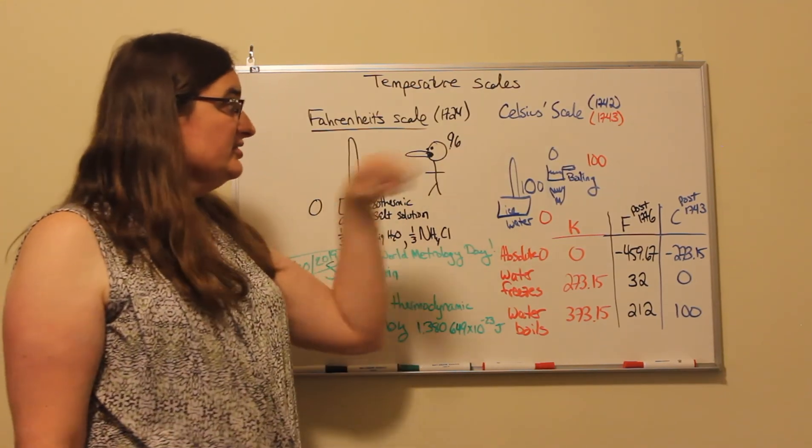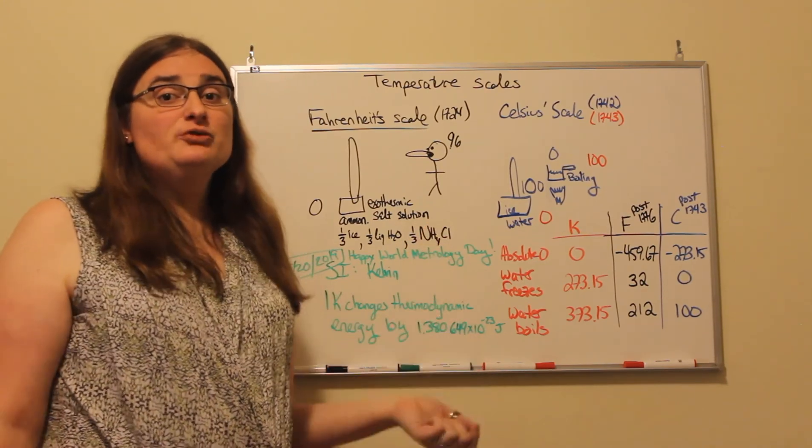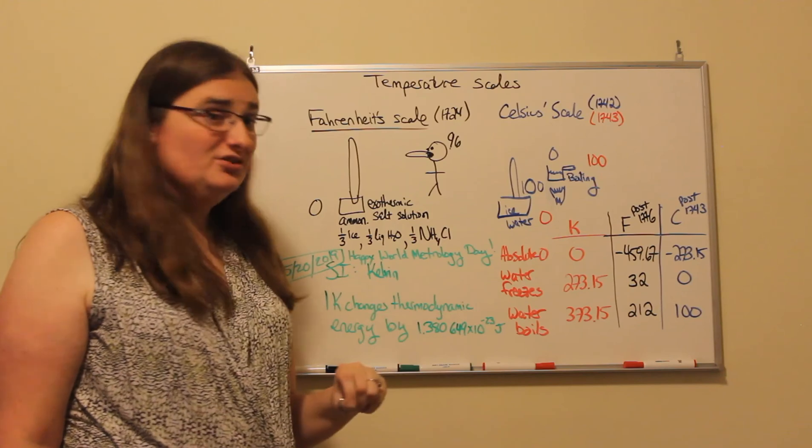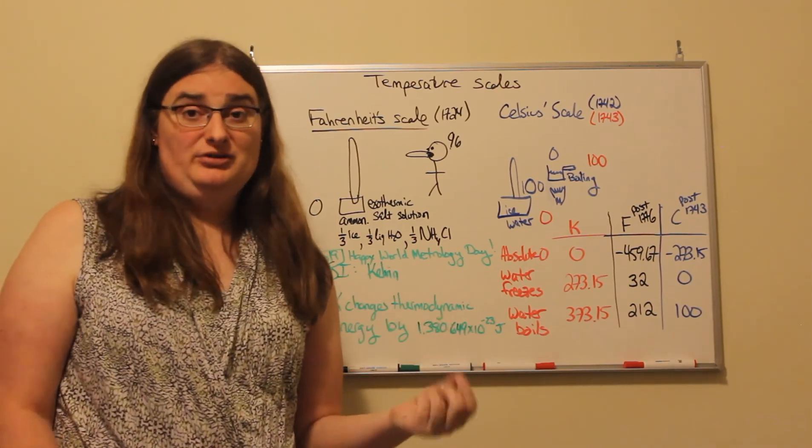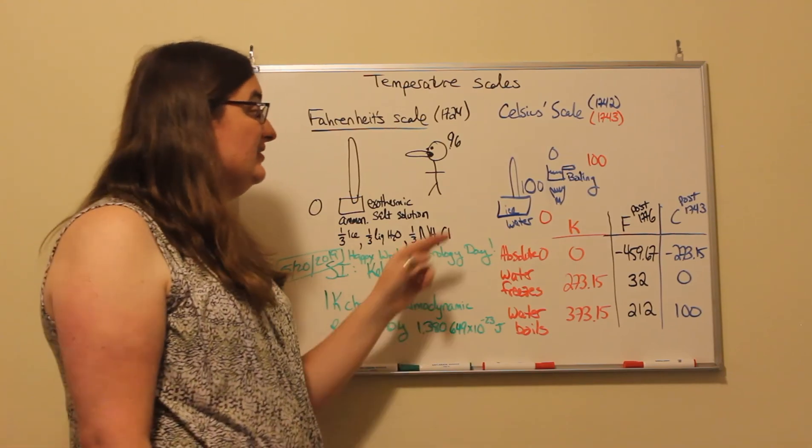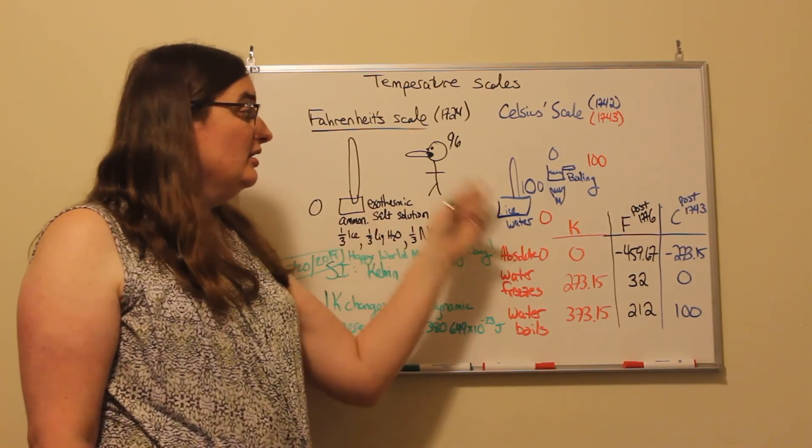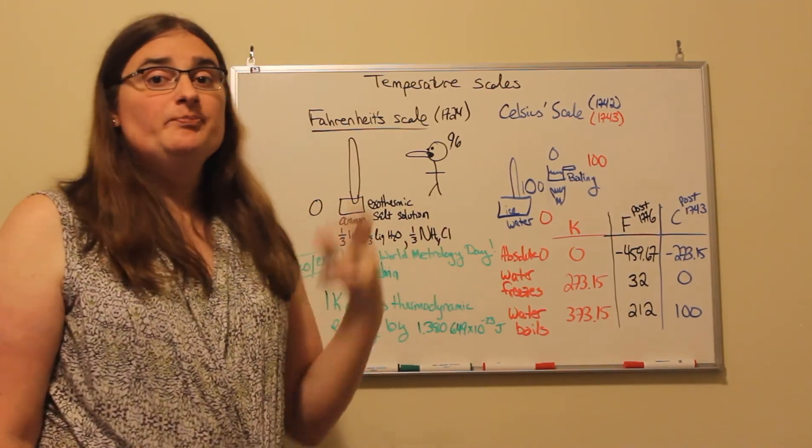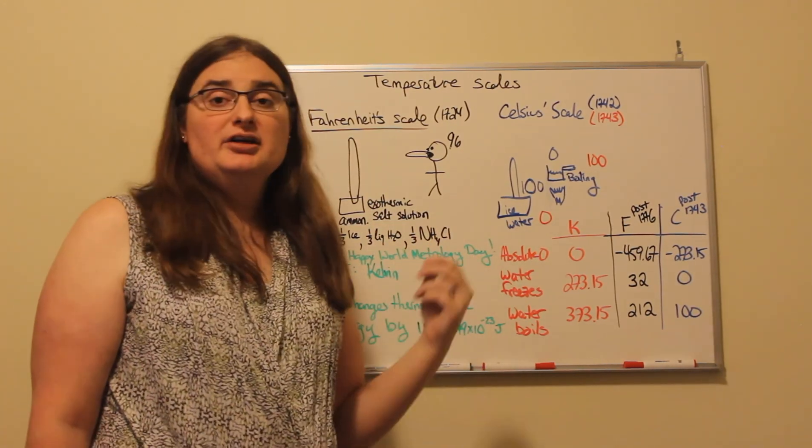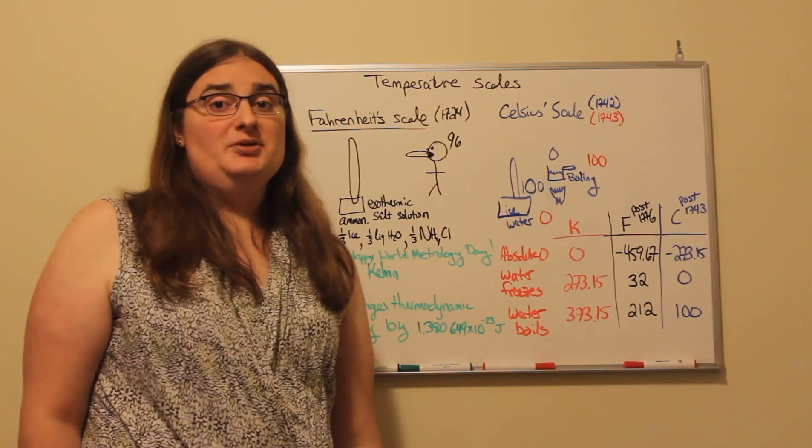The Celsius scale, as it was first proposed shortly before Celsius's death in 1742, is totally backwards from what we know as the Celsius scale today. Celsius proposed calling freezing water 100 in his units of temperature and boiling water 0 in his units of temperature.